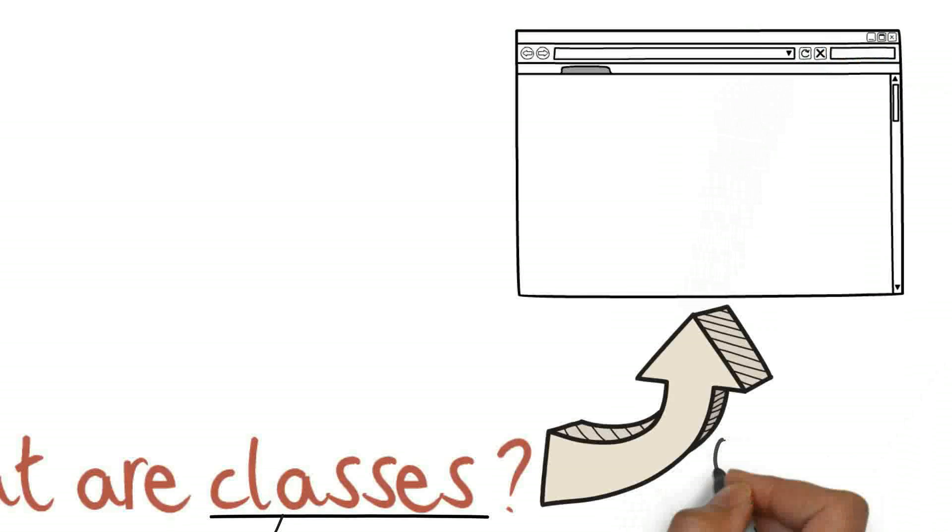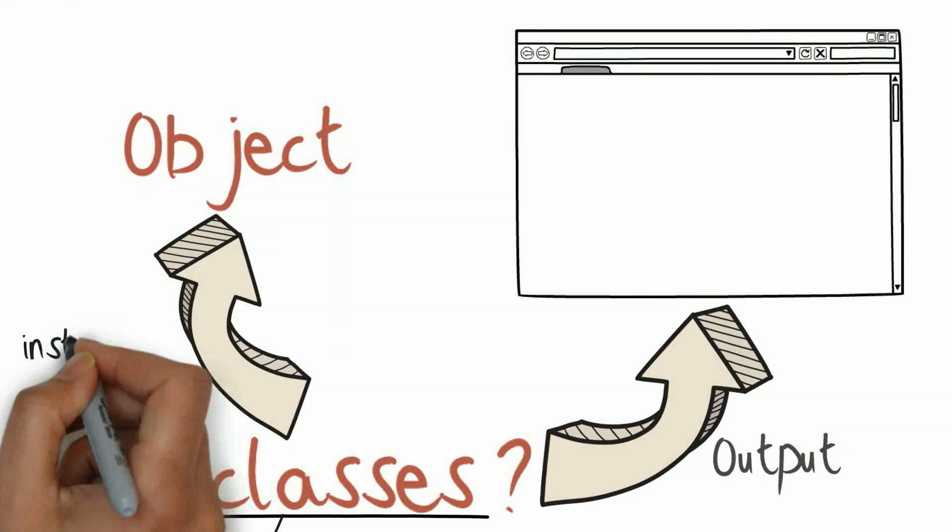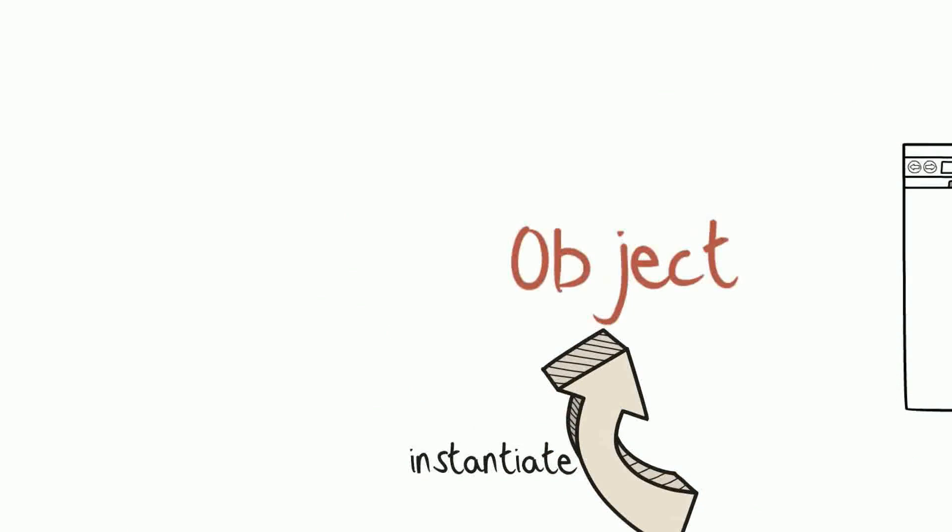Classes written in a program contribute to its output only when instantiated by an object. What is an object?